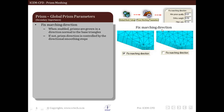You can see the effect of fixed marching direction. When it is activated this is how the marching direction is fixed, and when it is not activated this is how the growth of the prism layer is.